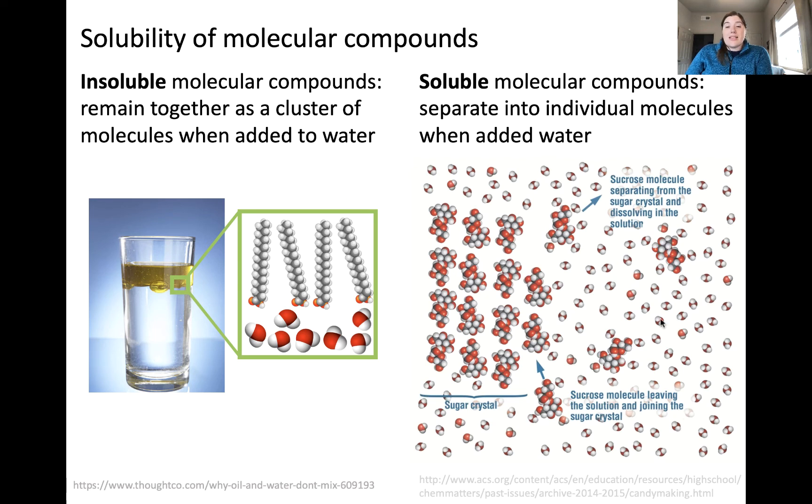Now, this is a pretty complex picture, but let's break it down. So the smaller molecules that you see kind of around the edge here, these are water molecules. And the larger molecules are sugar molecules or sucrose. The big cluster here on the left-hand side represents sucrose in a sugar cube or a sugar crystal.